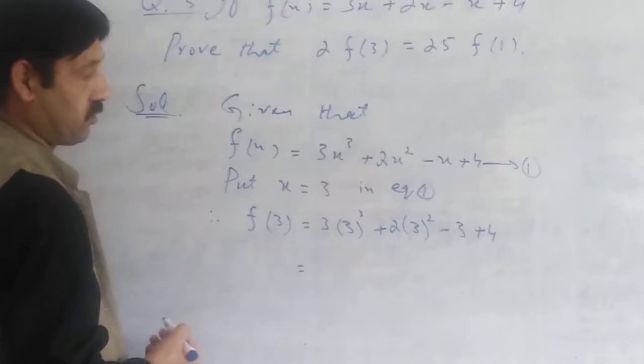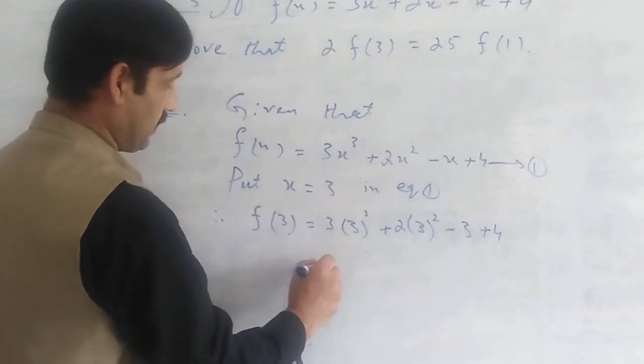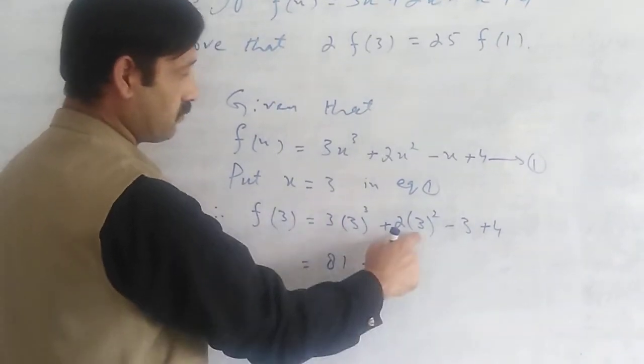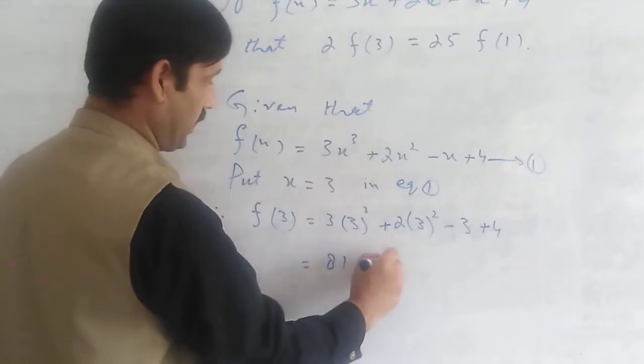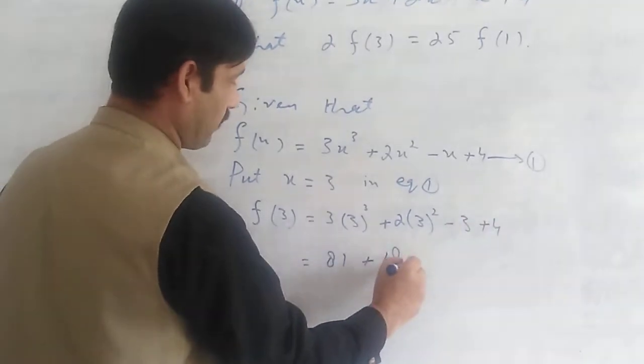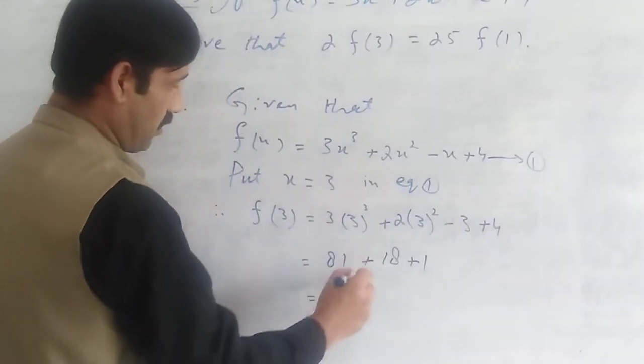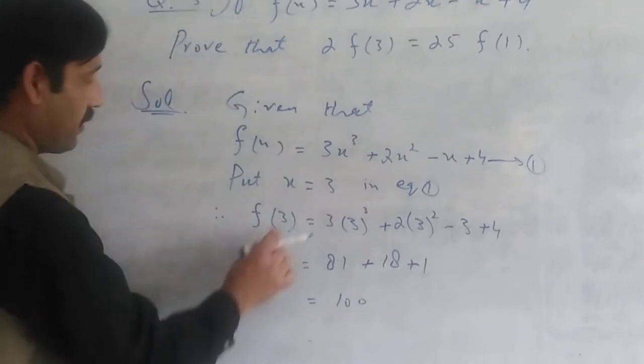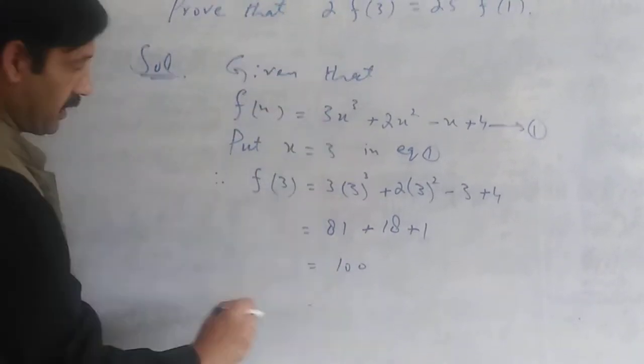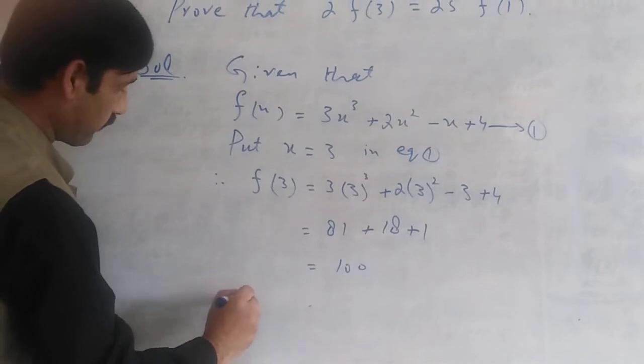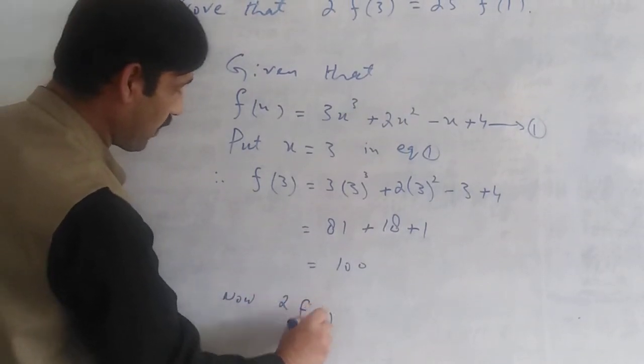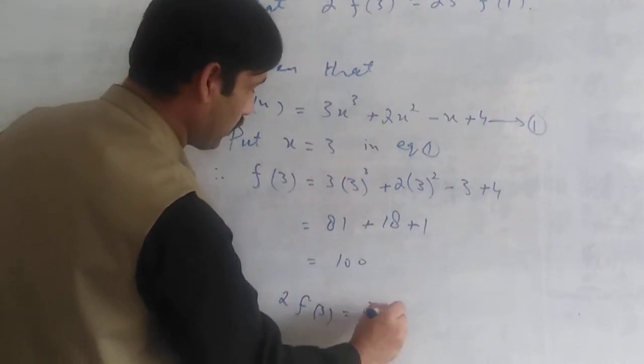We will simplify this. We will multiply this with 27 and 27 is 81. We will multiply this with 9. My values are 18, minus 3 plus 4 is 11. Now, 2 into f of 3. Here we have 2 into 200 which is equal to 200.